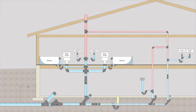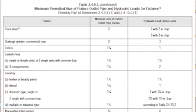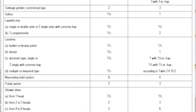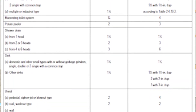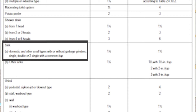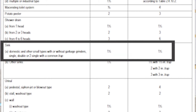Let's start by sizing the building drain. The building drain starts at the base of the main stack and goes out until we get to the building sewer, which occurs one meter outside of the building. We need to add up all the fixture units draining through the building drain, which in this case is everything that drains through the house. In table 2493, let's look up that kitchen sink — it's under 'sink' and has two compartments. A kitchen sink with two compartments is one and a half fixture units.